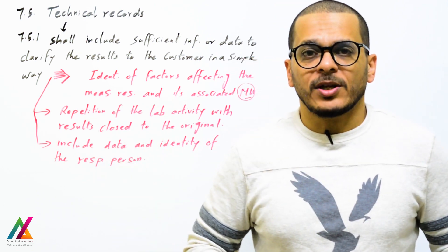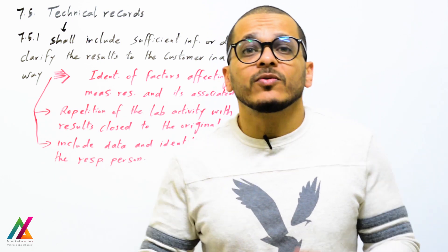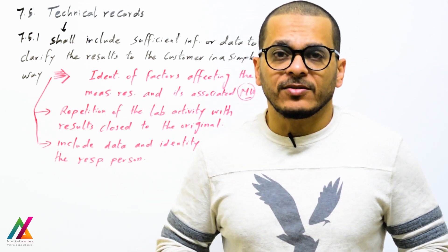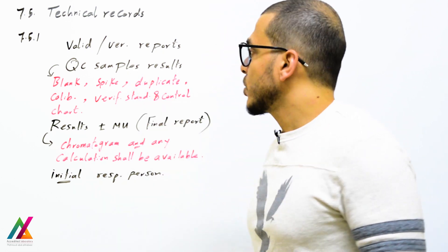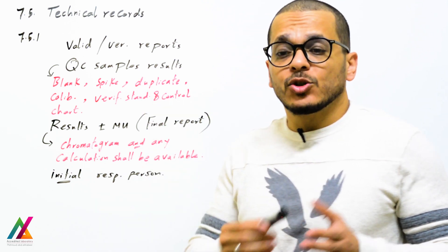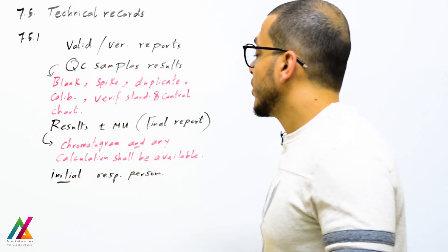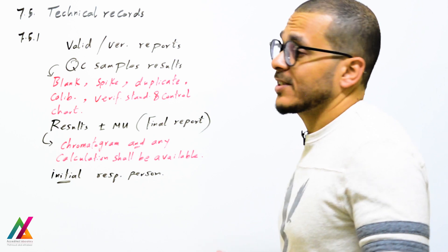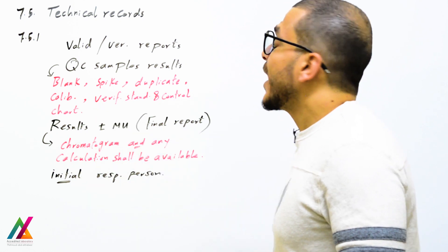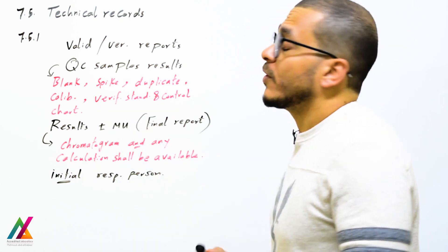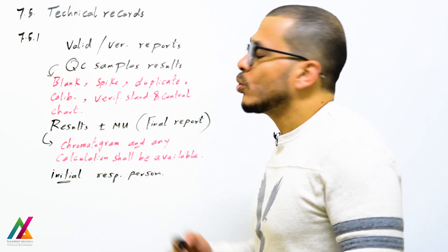In addition to quality control samples, all of your technical records shall include the data and identity of the responsible person for each lab activity. Technical records include: validation or verification reports, quality control samples run with every sequence, blank samples, spike samples to assess the efficiency of the method, and duplicates of the spike to prove the results, as well as calibration with an acceptance range and verification with an acceptance range.